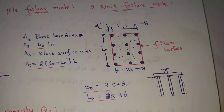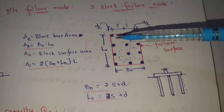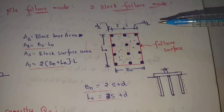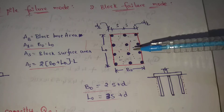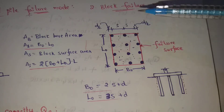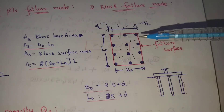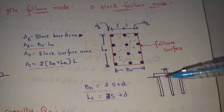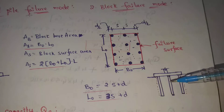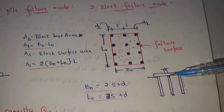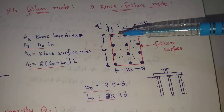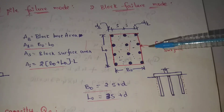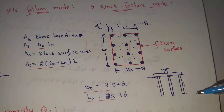The second mode is the block failure mode. In block failure mode, this pile group acts as a block — the first one. The cross-section shows a square shape, and the rectangle shape is the block cross-section.